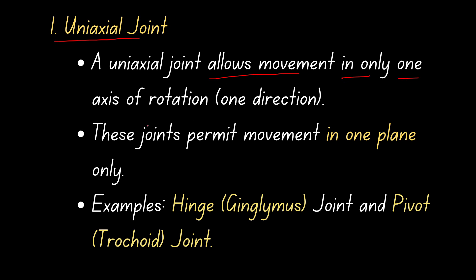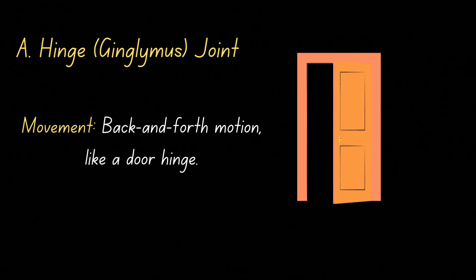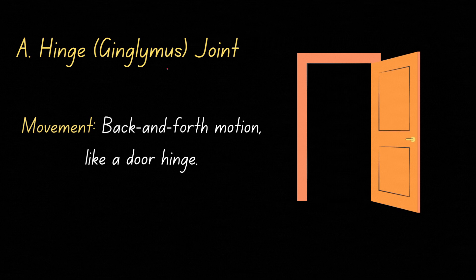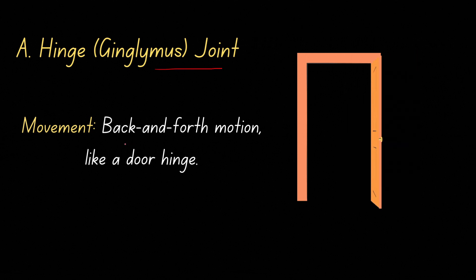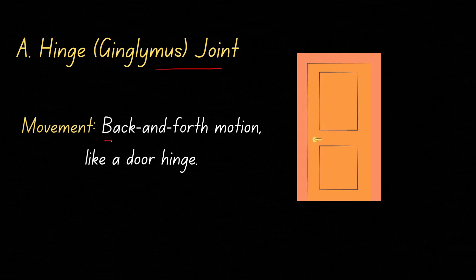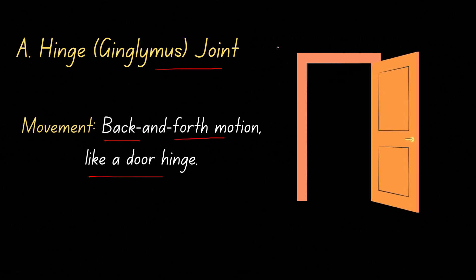Uniaxial joints allow movement in only one axis of rotation, one direction. The joints permit movement in one plane only. Examples are the hinge or ginglimus joint, and the pivot or trochoid joint.